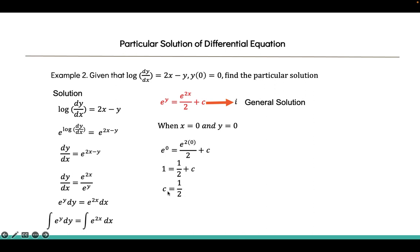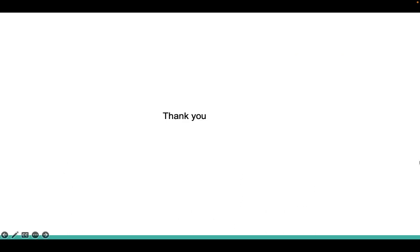Substituting C = 1/2 back into Equation 1 gives e^y = e^(2x)/2 + 1/2, which is the particular solution for this question. Thank you for watching this video on how to find the particular solution of a differential equation using the variable separable method.